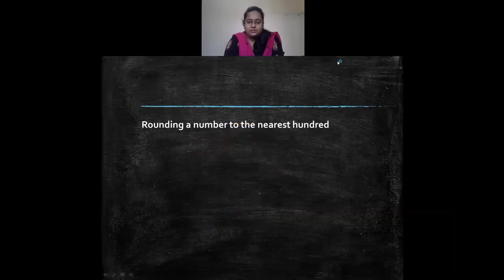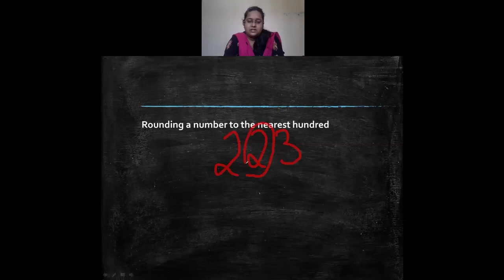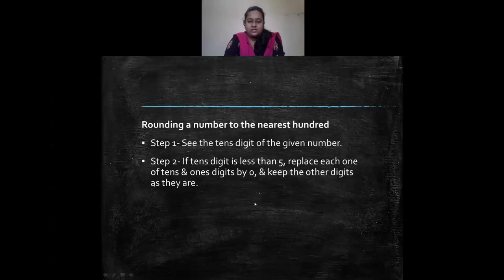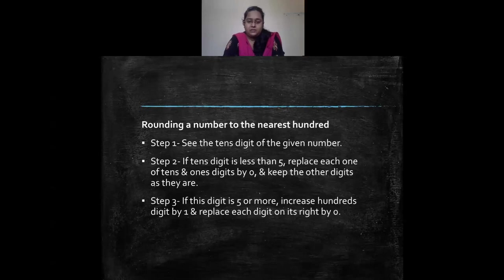Another example: 223 rounded to the nearest 100. We check the tens place. The tens digit is 2, which is less than 5, so we keep the hundreds digit 2 as it is and the rest of the digits become 0. So 223 is rounded off to 200. The rule is: see the tens digit — if less than 5, keep the hundreds place as it is; if 5 or greater, add 1 to the hundreds place and make the rest 0.